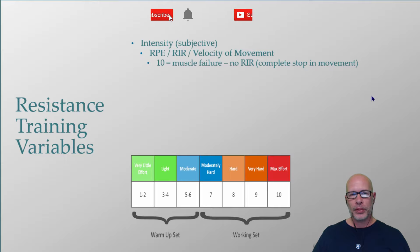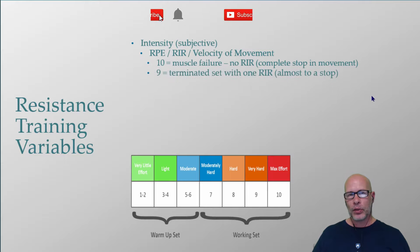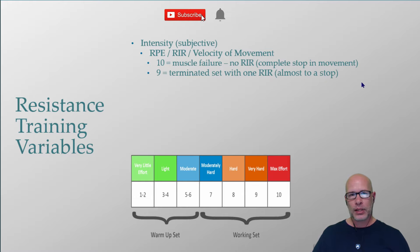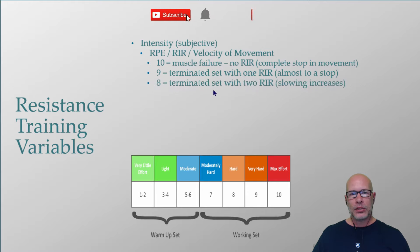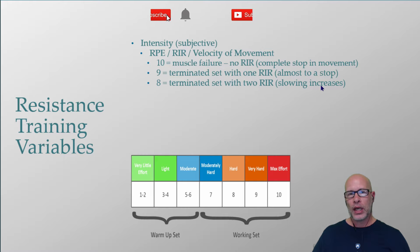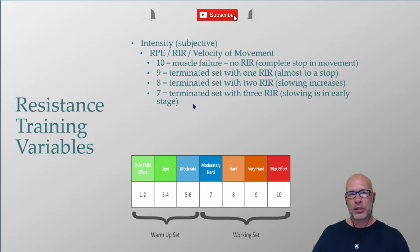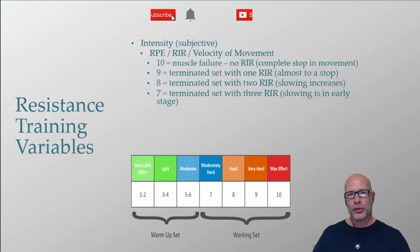When you perform a set, it was either a warm-up or a working set, and both fall on a continuum of effort or intensity. A 10 on a scale of 1 to 10 is muscle failure — no repetitions in reserve. A 9 means you terminated the set knowing you had one or two repetitions left in reserve, and the slowing of movement almost came to a stop. An 8 means you terminated with two to three reps in reserve and significant slowing. A 7 means three to four reps in reserve with early slowing.